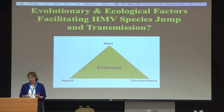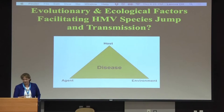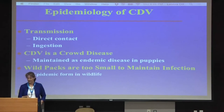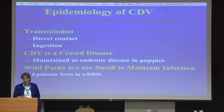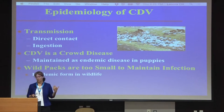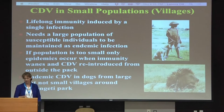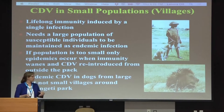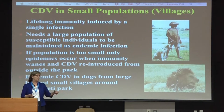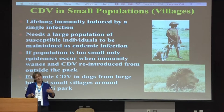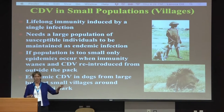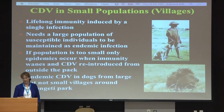What evolutionary and ecological factors might have facilitated human measles jumping into canines? Canine distemper is a direct contact crowd disease, and studies suggest wild packs are too small to maintain it as an endemic infection. A factor in domestication is that dogs came to garbage dumps, creating larger clusters. Studies of villages outside the Serengeti — prompted by lions getting canine distemper — found that dogs in large villages maintained the virus as endemic, while dogs in smaller villages experienced it only as epidemic outbreaks, similar to wildlife.